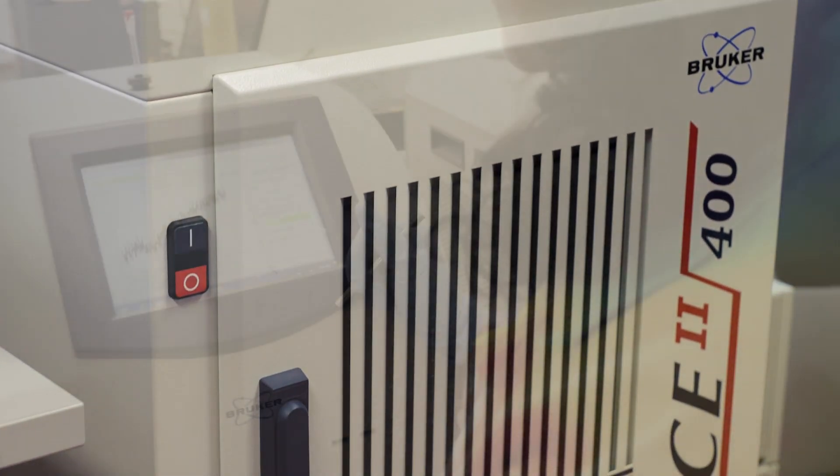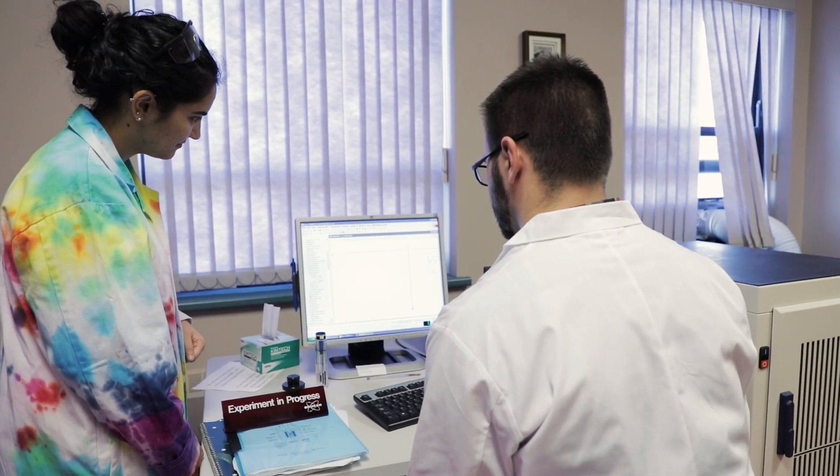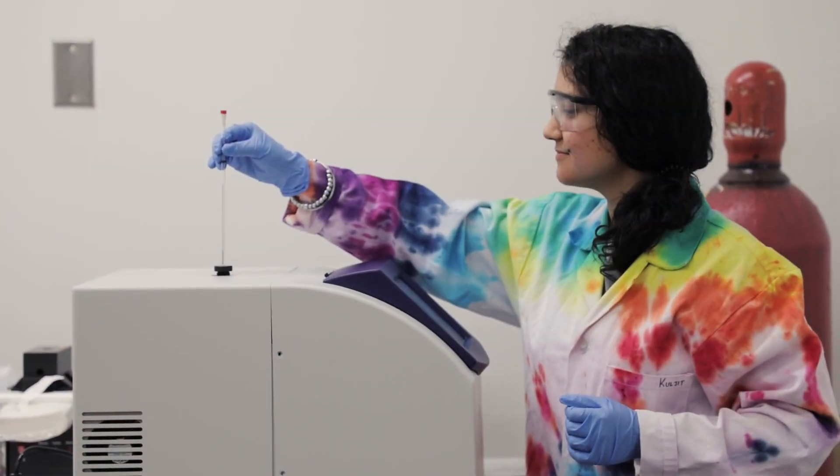So on campus at CBU, we have two instruments that have been supplied by Bruker, an NMR spectrometer and an EPR spectrometer. Both of these instruments are available to our students as part of their undergraduate program. These instruments were chosen for several very important reasons.